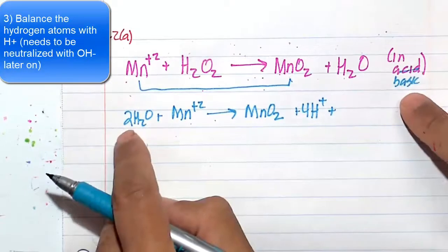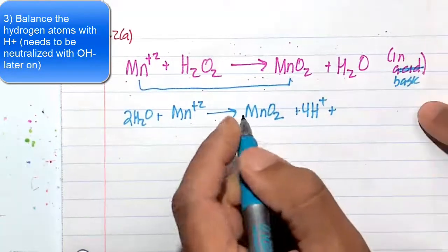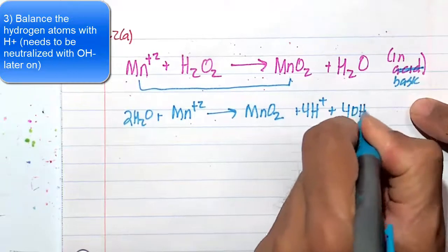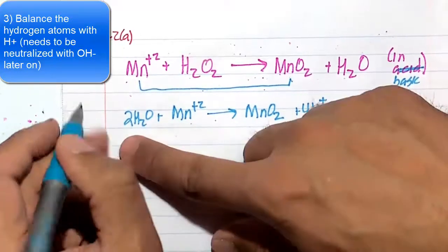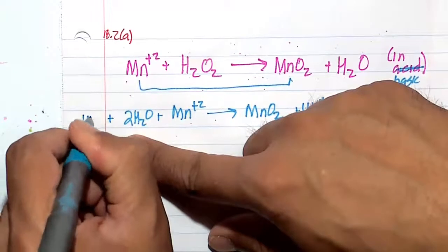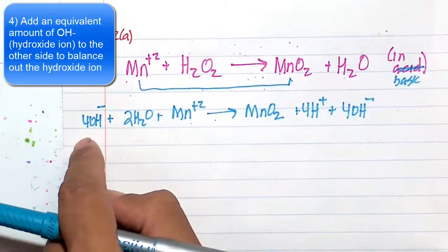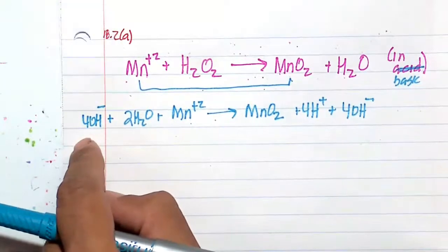Realizing I cannot have H+ because this is in base, not acid. So I will neutralize the corresponding H+ with 4 OH-, and whatever OH- I add to one side, I have to add the equivalent amount to the other side. And then we can go ahead and balance the charges here.